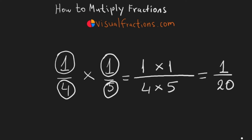So, 1 quarter multiplied by 1 fifth equals 1 20th. That's our final answer. It's important to note that 1 20th is already in its simplest form.